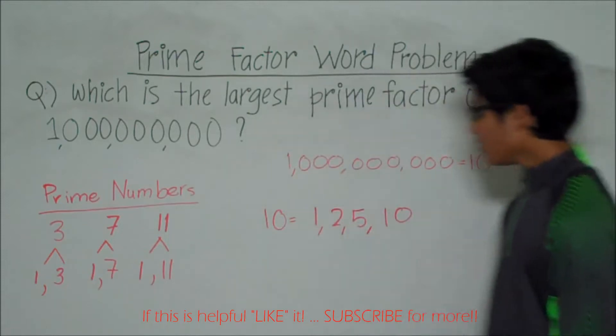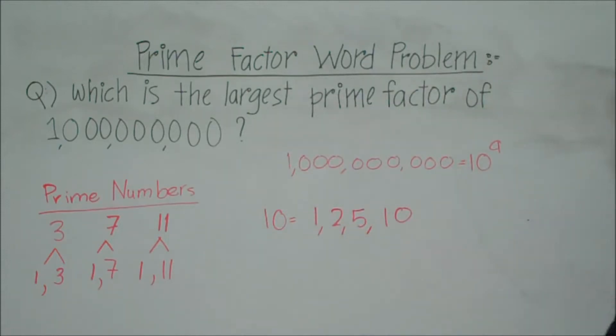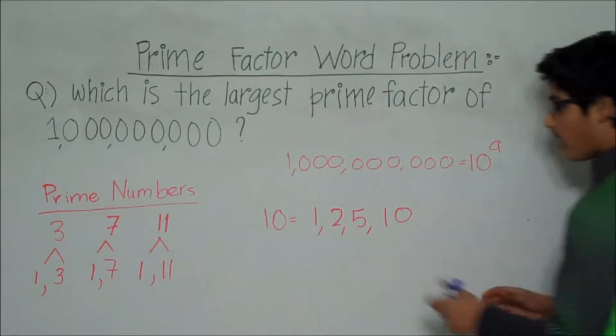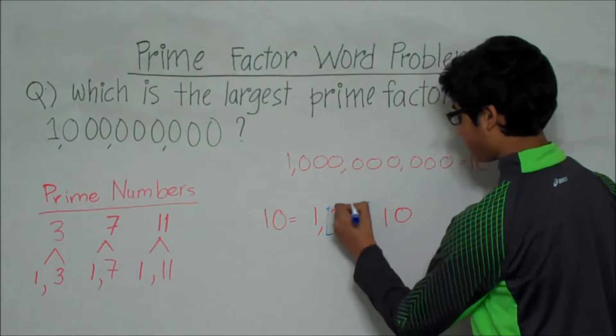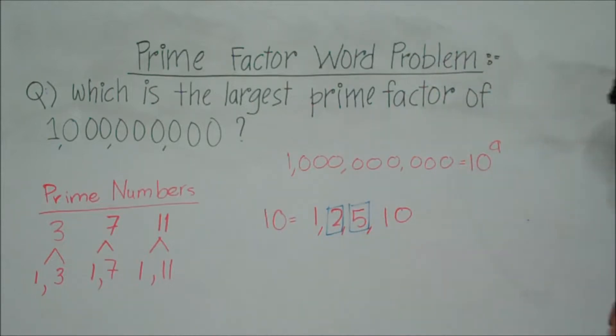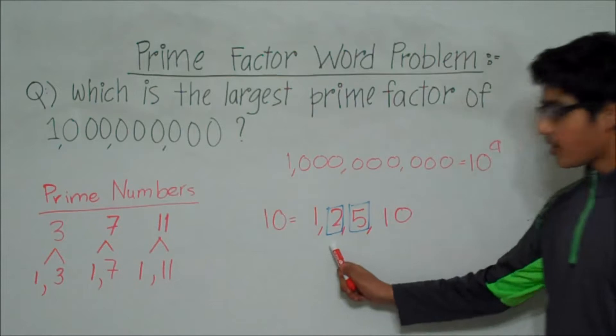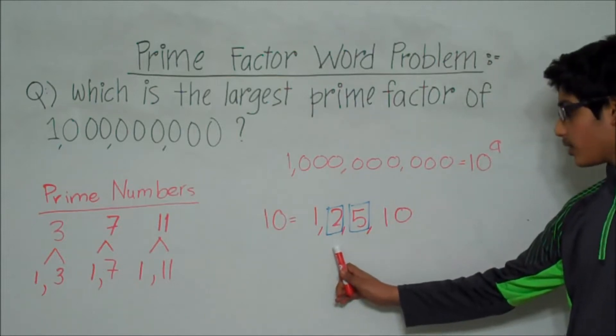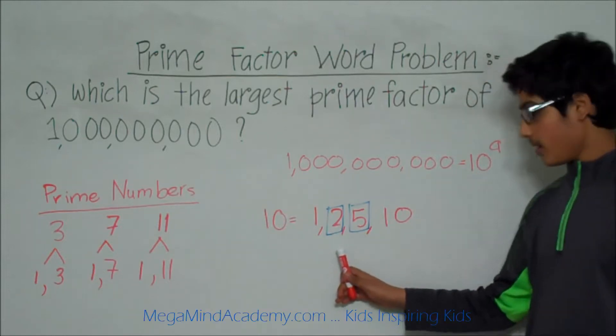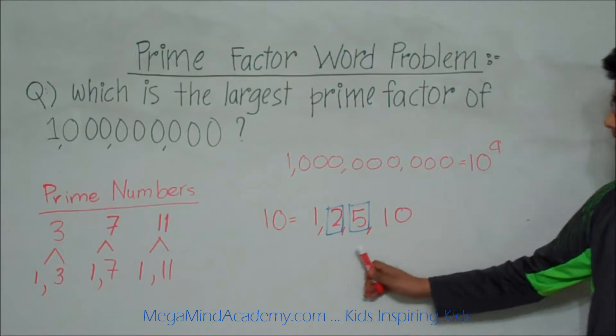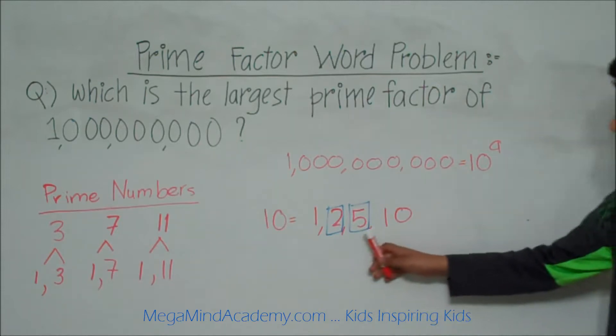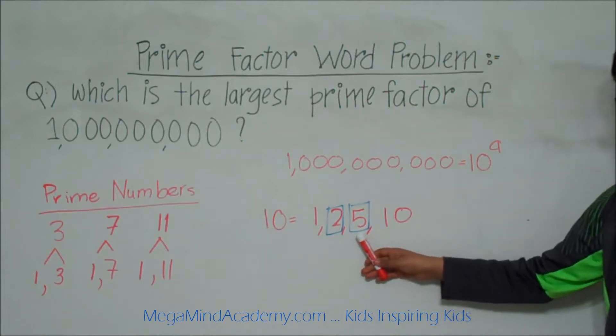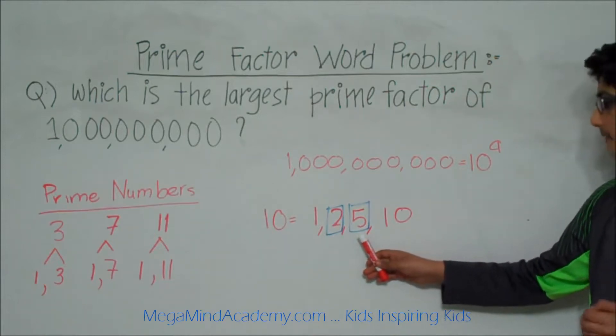Out of these numbers, there are only two numbers that are prime numbers: 2 and 5. 2 is a prime number because the only factors of 2 are 1 and 2. And 5 is also a prime number because the only factors of 5 are 1 and 5.